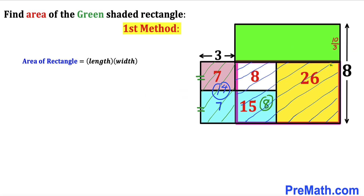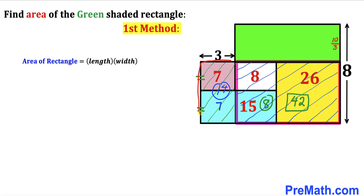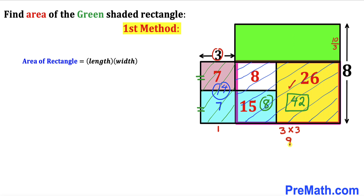Now let's focus on the big rectangle that consists of three individual rectangles with areas 26, 8, and 8. Adding these: 8 plus 26 plus 8 gives us 42. The area of the adjacent rectangle is 14, and this big rectangle is 42, so the ratio is 1 to 3. That means if one side is 1, the other is 3. Since we know one side is 3 units, the corresponding side length is 3 times 3, which gives us 9 units.